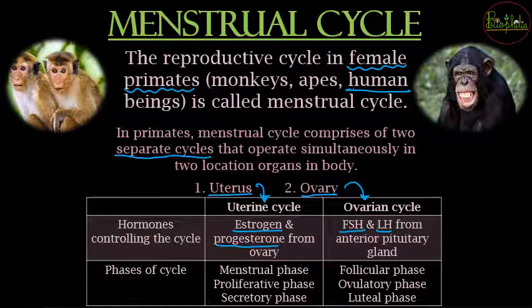There are three phases in the uterine cycle: the menstrual phase (actual shedding of the endometrium), the proliferative phase, and the secretory phase. Comparing these with the ovarian cycle, there are three different phases: the follicular phase, the ovulatory phase, and the luteal phase. We need to compare and understand the differences between these phases.